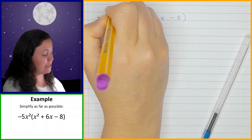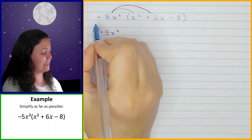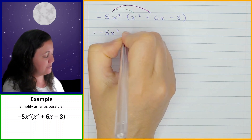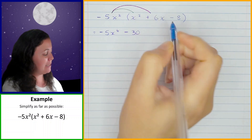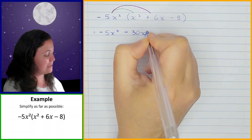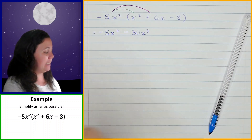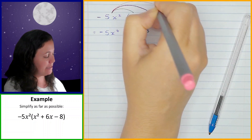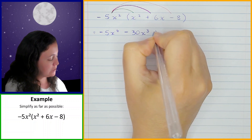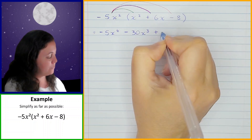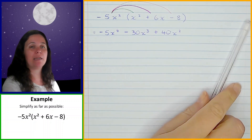Now we're going to multiply by the next term, negative 5x squared multiplied by positive 6x. Negative times positive is negative, 5 times 6 is 30, and x squared times x is x to the power of 3. And then the last one is negative 5x squared times negative 8 — negative times negative is positive, 5 times 8 is 40, and then x squared. So that's what we get for that question.